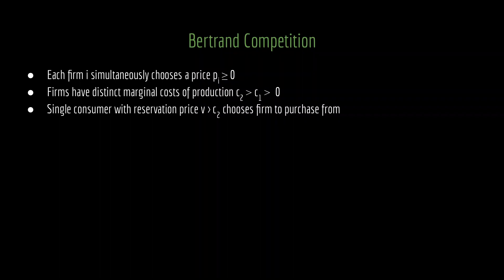Like before, we have a single consumer, and that consumer will have a reservation price V larger than C2. The idea being that this consumer could potentially do business with either of the firms. If we had that reservation price between C1 and C2, that means that firm 2 is never really in competition for this consumer's business — they would never be able to come up with an agreement that would suit both of them. So if we have that reservation price instead larger than firm 2's marginal cost, then in isolation, firm 1 would want to do business with the consumer, and in isolation, firm 2 would want to do business with that consumer.